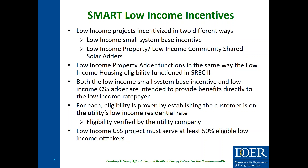Under the SMART program, we incentivize low-income projects in two ways. Projects receive a base incentive based on their size, then additional adders on top. The highest base incentive is for qualified low-income small projects — 25 kW or less — where residents must be eligible as low-income. We also have adders for low-income properties and for low-income community shared solar. The low-income property adder functions the same way as the low-income housing eligibility under SREC 2.